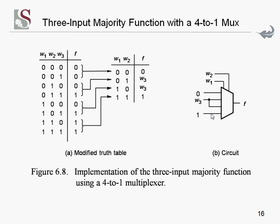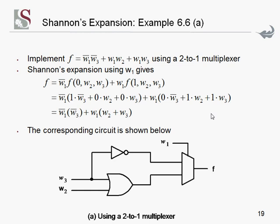For an example of Shannon, consider the function F equal to NOT W1 · NOT W3 plus that term plus this term, and rewrite it as a 2-to-1 multiplexer. Using Shannon's expansion theorem: F equals NOT W1 ANDed with the whole function where W1 is replaced by 0, plus W1 ANDed with the whole function where W1 is replaced by 1. You can use any variable; in this case we start with W1.